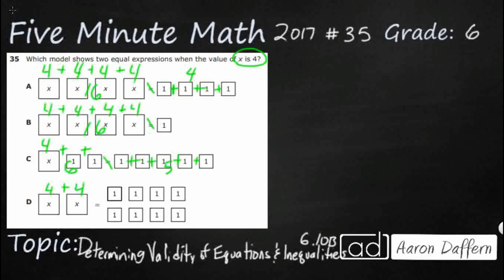So let's hope our answer is D. We've got 4 plus 4 — that's 8. And look at this: we've got two sets of 4, so 4 and 4 is going to make 8. So D is going to be our answer.